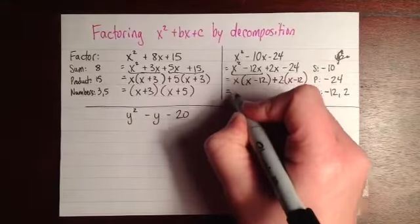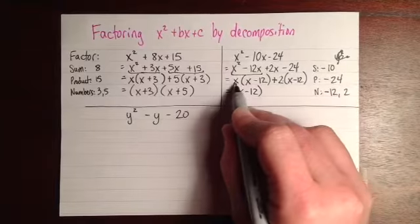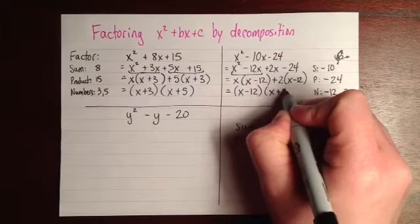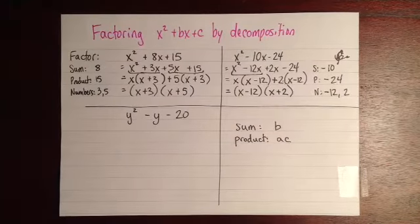So our factored form of this, we have a whole lot of x minus 12s, and in fact we have x of them and then 2 more of them. So it's x plus 2 times x minus 12.